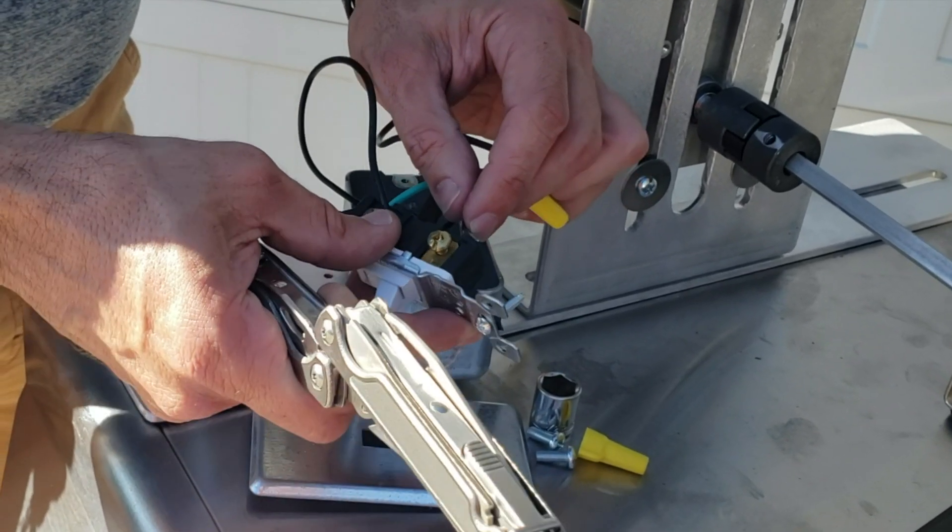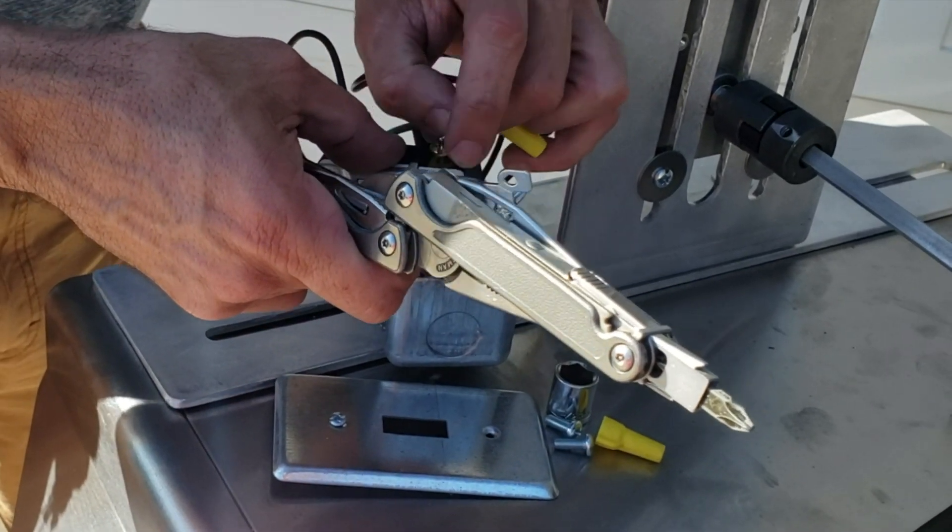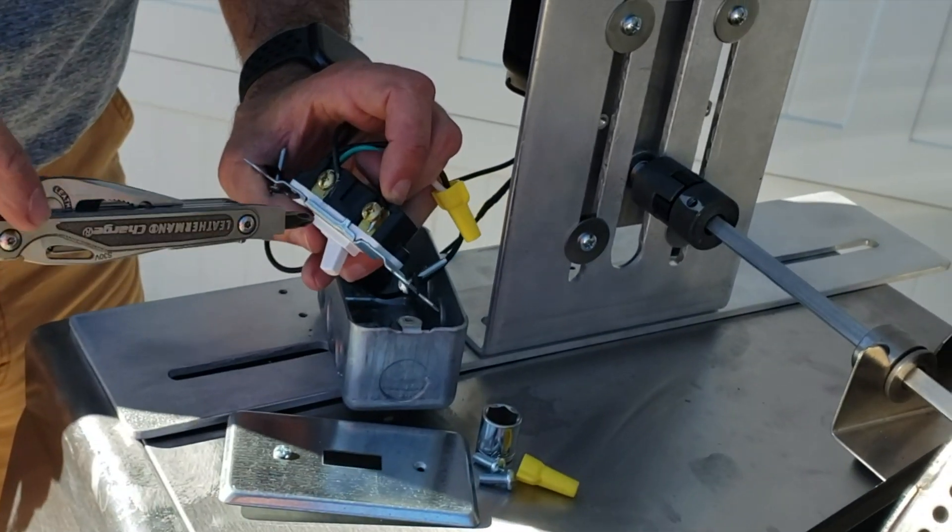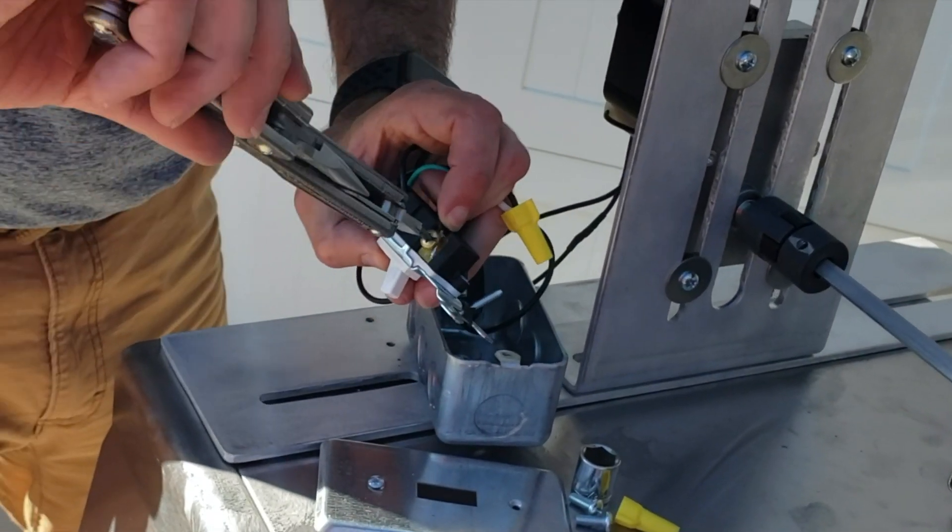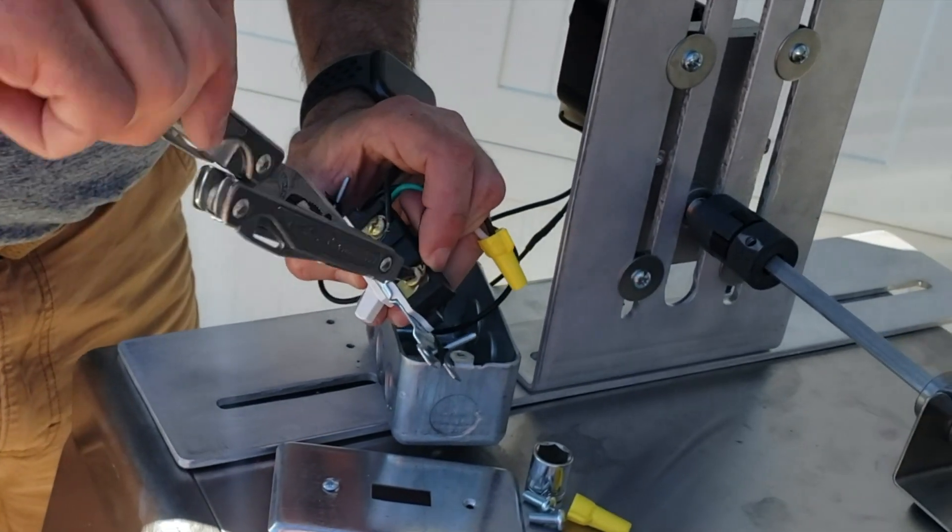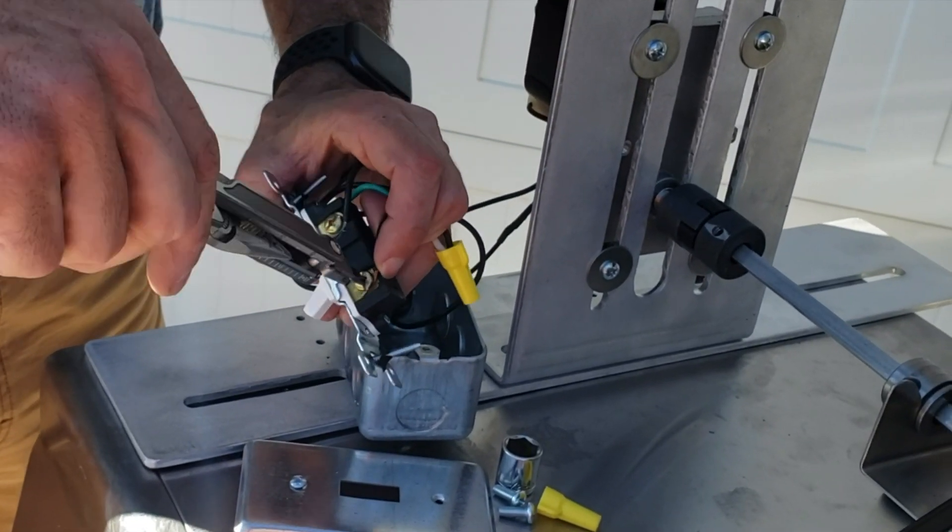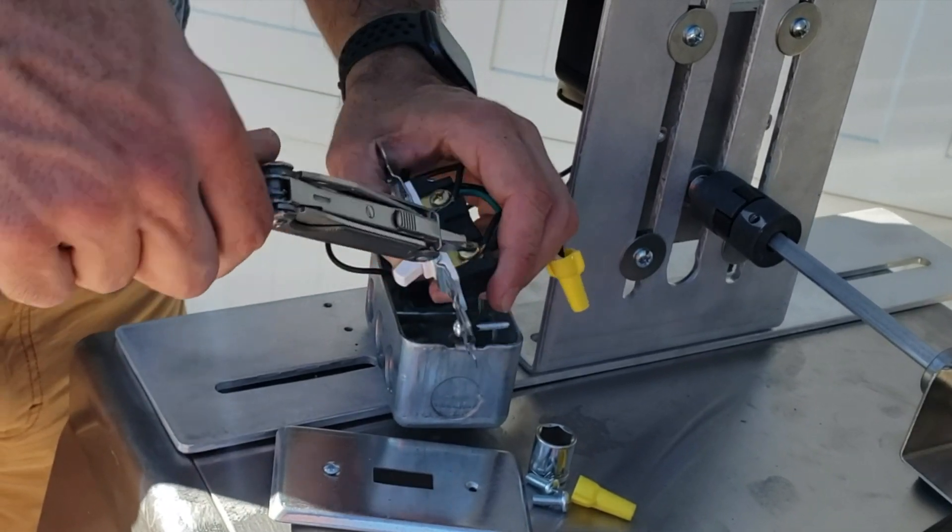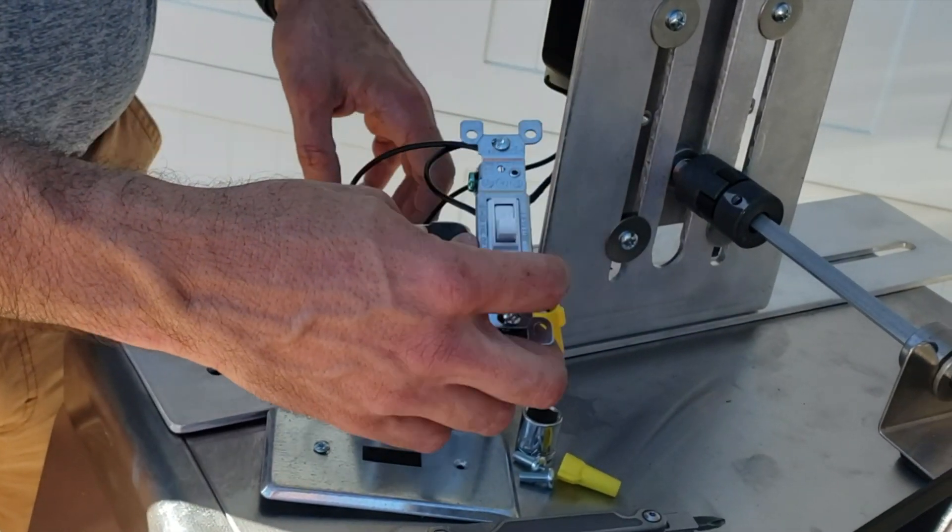And now the black wire from the power cord is going to go underneath. By the way, make sure when you're doing this that you've unplugged your power cords from the wall. Don't have these plugged in. I hope that's obvious. And then we're going to tighten down this other one. Now, if you get this wrong, the worst thing that's going to happen is you're going to blow a circuit breaker in the house or in your building, but that's it. That's all we're doing here.